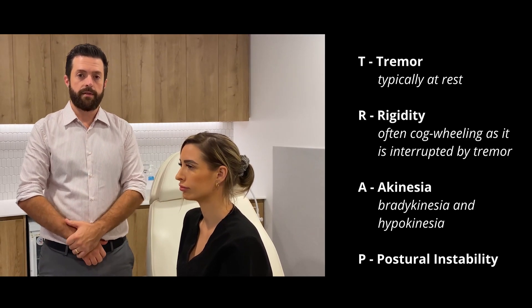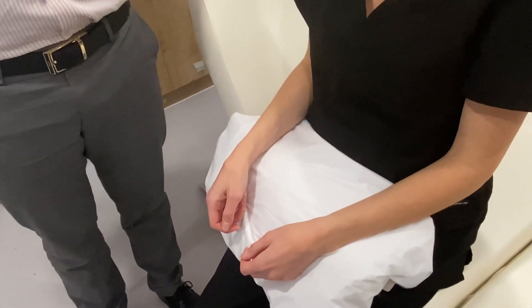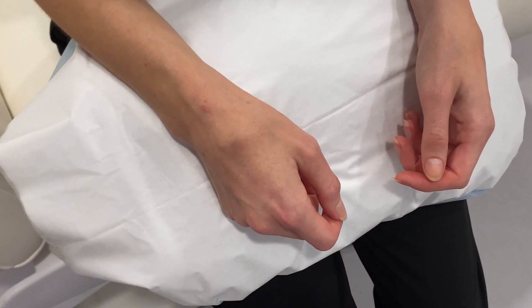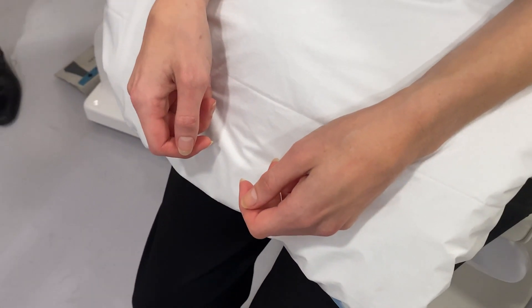We start with T for tremor. The way to bring this out is to pop the patient's hands on a pillow in about mid pronation. It's often good to opportunistically examine patients — put the pillow there and take the history while watching the hands. You can also distract the patient with serial sevens, which tests cognition. You're looking for the characteristic Parkinson's resting tremor at around four to six Hertz, described as a pill-rolling tremor with a supination-pronation component.